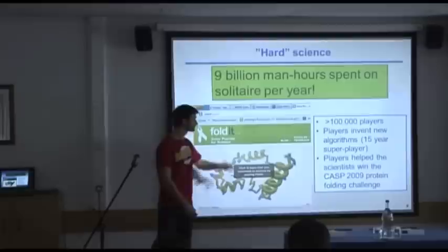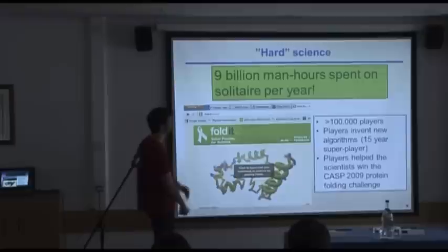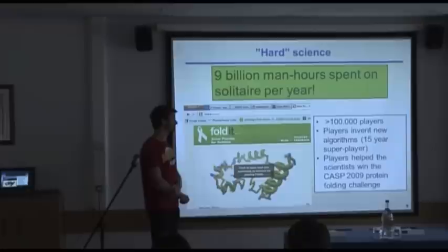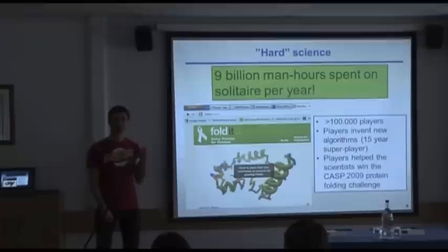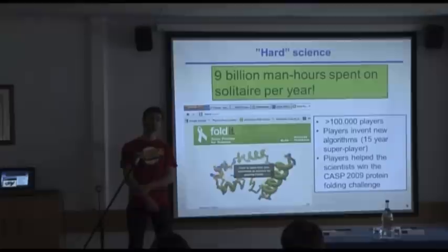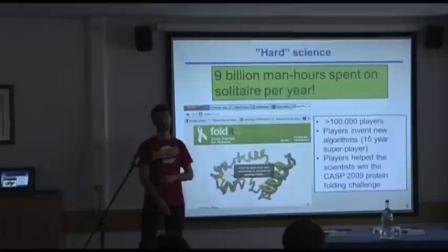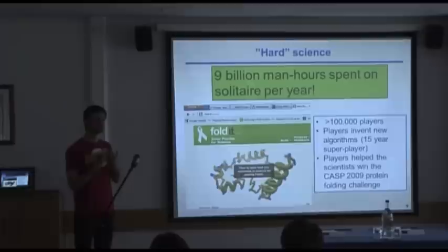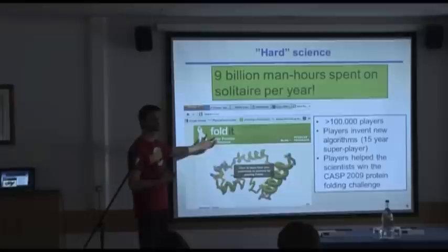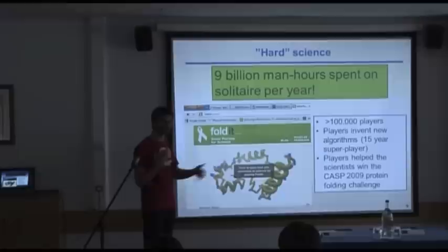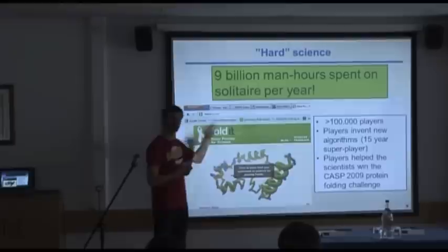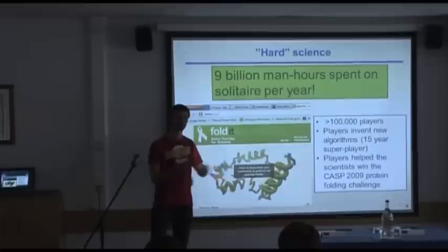And then of course you probably know Foldit, which belongs to these hard-to-solve science tasks. They have been very successful. One of the main points is that they found a few players who came up with new algorithms that have been shown to solve problems beyond what those algorithms were originally developed for. So they've gone beyond artificial intelligence, and in finding these algorithms they've also made artificial intelligence more intelligent.